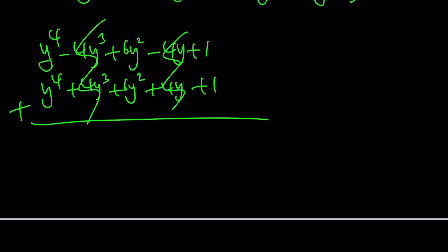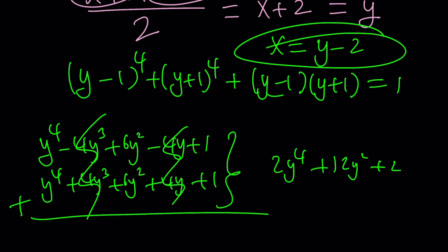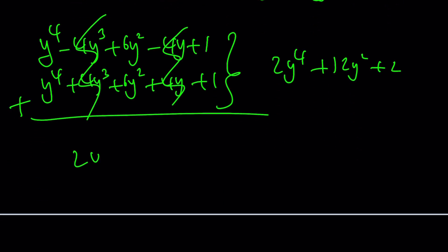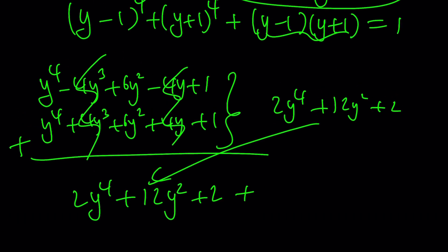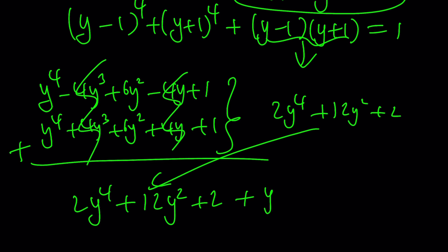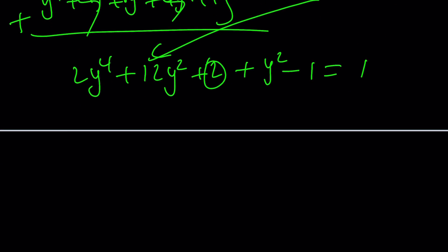These are gone and we end up with 2y^4 plus 12y^2 plus 2. Great. And then we have this, which is y^2 minus 1. So let's go ahead and add it all together. We have 2y^4 plus 12y^2 plus 2 plus the difference of two squares, which is y^2 minus 1. You should definitely know that formula. 2 minus 1 is equal to 1. How nice. They cancel out. That's what makes these problems so beautiful.